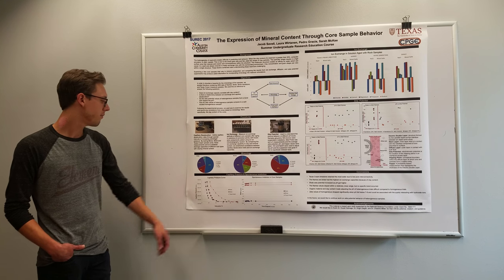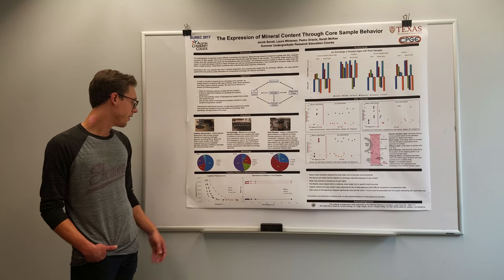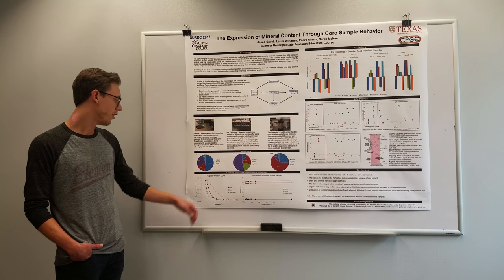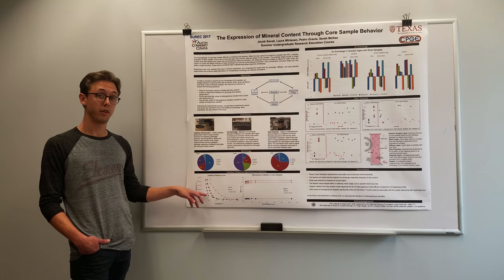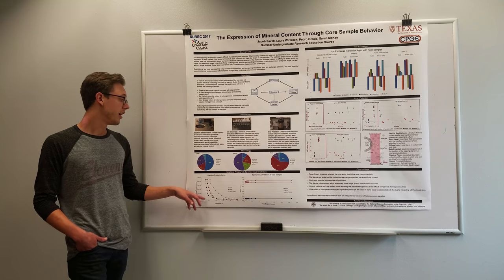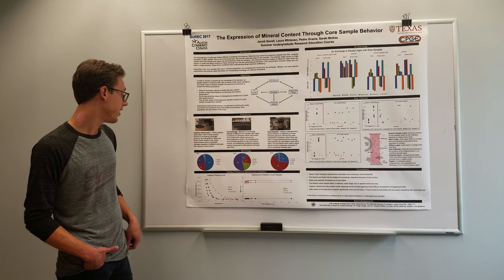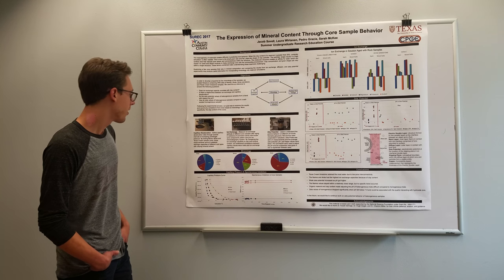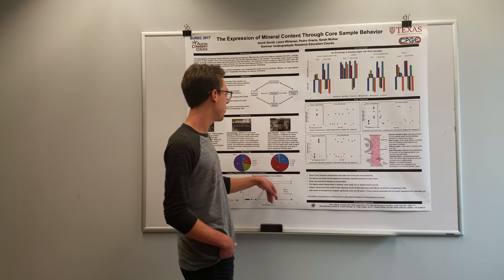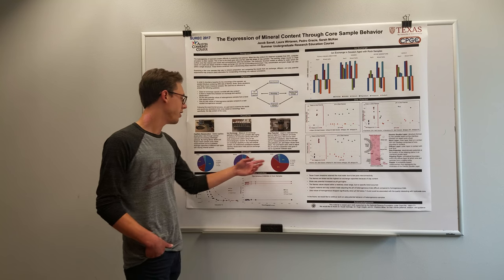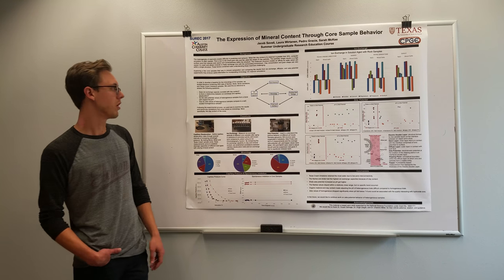Next up was the Barea, which retained the second most amount of water, and finally was the Boise. The Barea did contain a little bit more clay content than the Boise, and we believe that is the reason why it retained more water. So if there was a link between capillary desaturation and ion exchange, we believe it would be in the mineralogy — more specifically the clay content of those rocks.